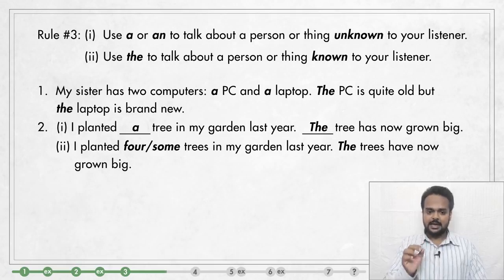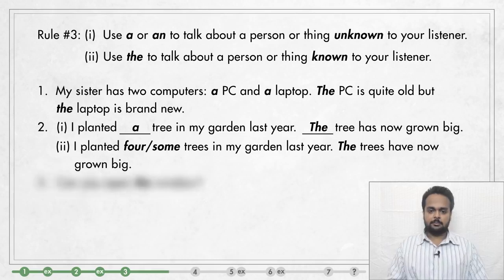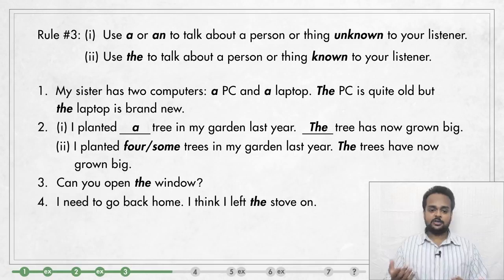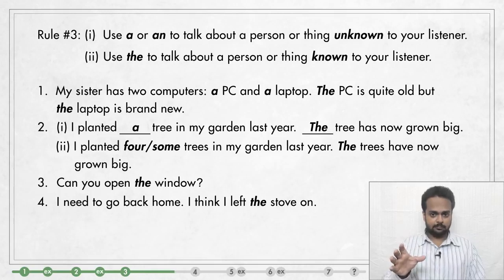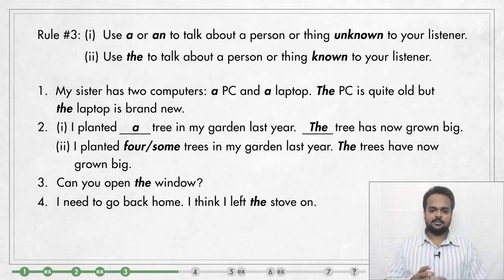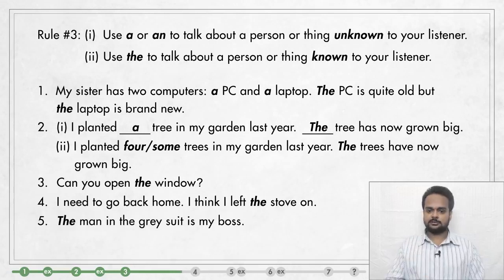But sometimes you don't need A or AN because your listener will automatically understand what you are referring to. For example: can you open the window? If we're sitting in a room and I say this to you, you will know which window I'm talking about. Or if I said: I need to go back home, I think I left the stove on — you can understand from the situation that I mean the stove in my house. But this isn't always possible. For example, if I say the man is my boss, you will ask: which man? But if I say the man in the grey suit is my boss — you know which one I'm talking about.